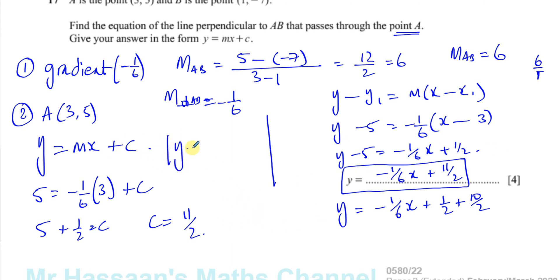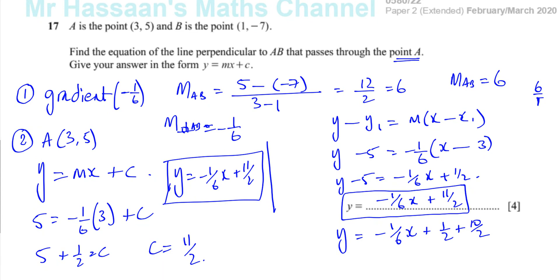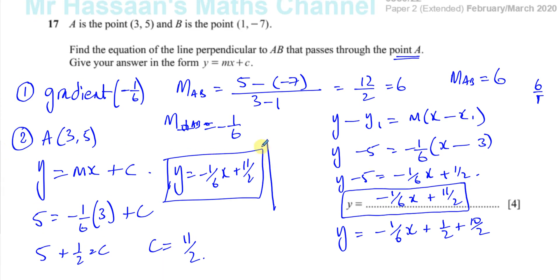So the answer will be Y equals minus 1 over 6 X plus 11 over 2. Of course we get the same answer, it's just two different ways of doing it. Pretty simple. Things you need to know is that the line that's perpendicular to another line has a gradient which is its negative reciprocal. And to find the equation of the line we need the gradient and a point that the line passes through. And there we have the answer to question number 17.